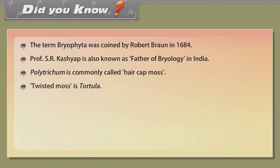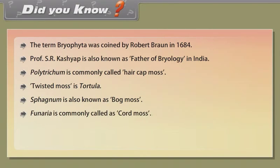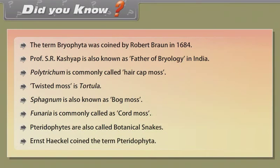Twisted moss is Tortula. Sphagnum is also known as bog moss. Funaria is commonly called as cord moss. Pteridophytes are also called botanical snakes. Ernst Haeckel coined the term pteridophyta.